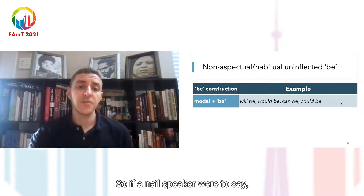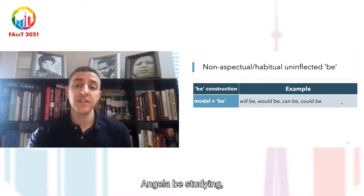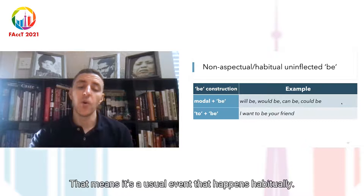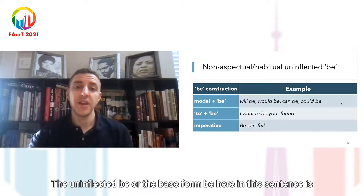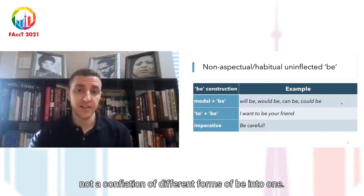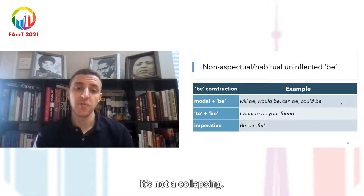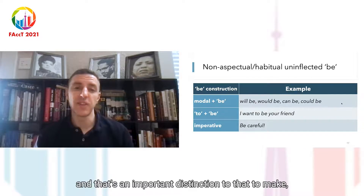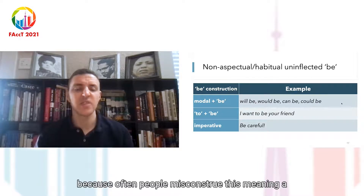There are also non-habitual uninflected forms of B, such as B following a modal — words like will, would, can, and could — or the infinitival 'to,' like 'I want to be your friend,' or in the imperative, like 'be careful.' However, these Bs, though uninflected, are not the same as habitual B because they do not express the habitual aspect. These express different forms of mood, but not the habitual. So that's the difference.